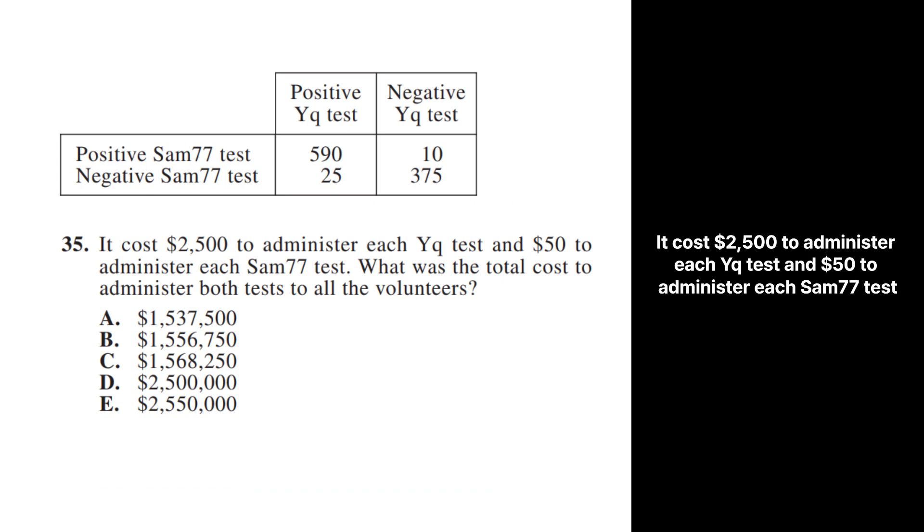It cost $2,500 to administer each YQ test and $50 to administer each SAM77 test. What was the total cost to administer both tests to all the volunteers?